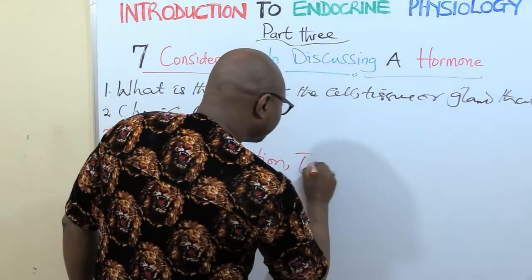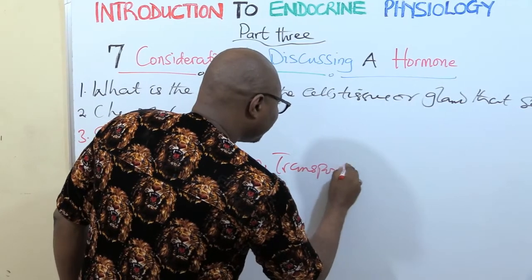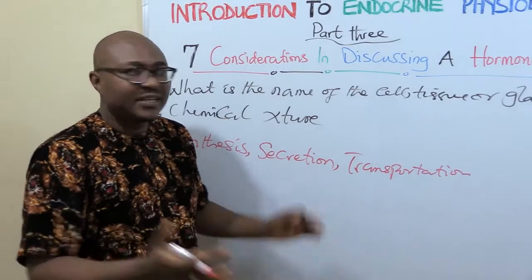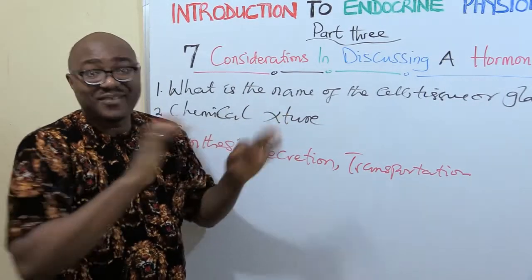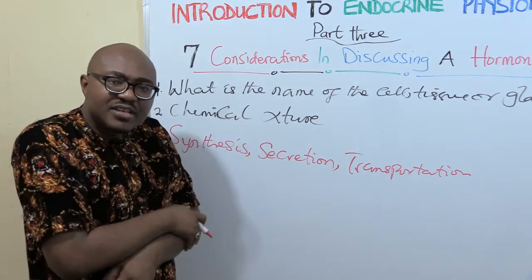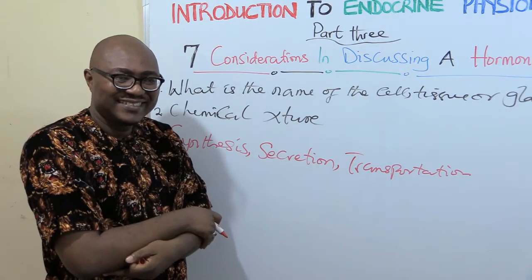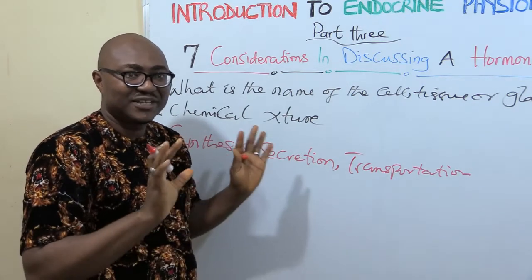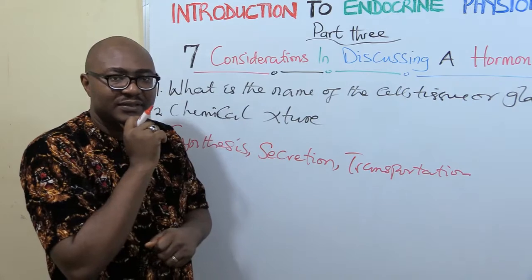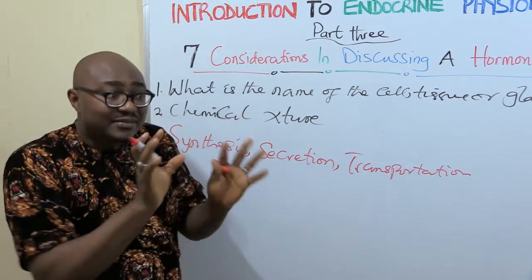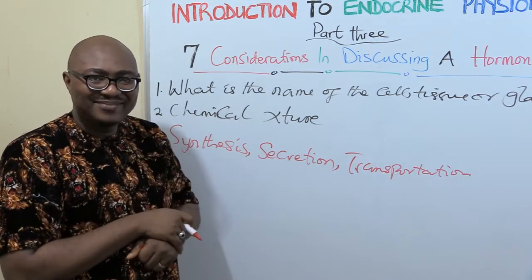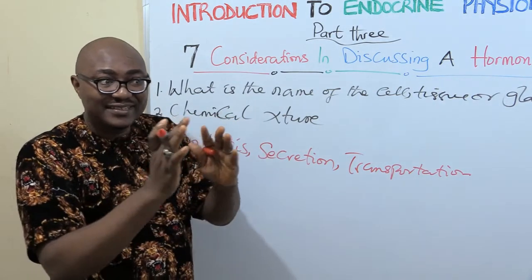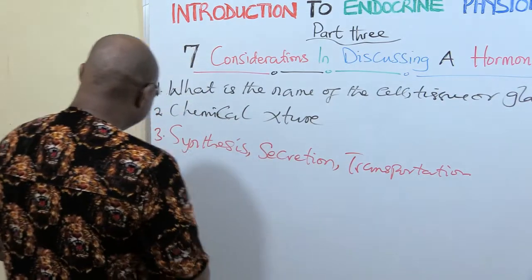Then next: transportation. All hormones are released into the blood — how are they transported? Water-soluble hormones don't have a problem with transportation. But steroid hormones need to be bound to plasma proteins before they can be transported. You need to know which plasma protein — sometimes it's albumin, sometimes they have their own special plasma protein. A good example is thyroid hormones, which use thyroid-binding globulin. So you need to know about the transportation.